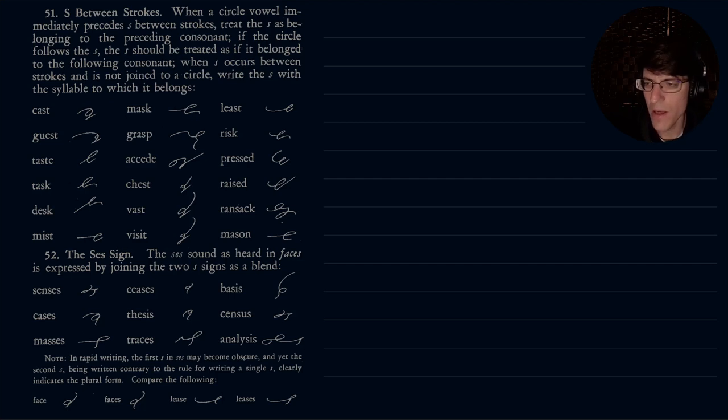So a circle vowel immediately precedes S between strokes. So we have cast, for instance. If the circle follows the S, then S should be treated as belonging to the following consonant. So in this case, cast would have the circle vowel, it preceded. To be honest, this one I tried to figure it out once and I really don't know exactly what they're saying. So let's just write these out and see what we get.